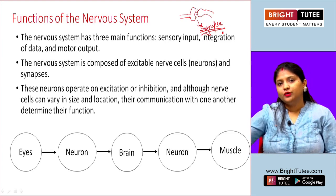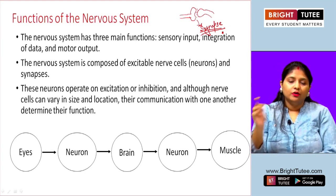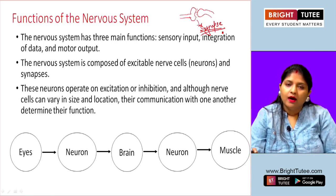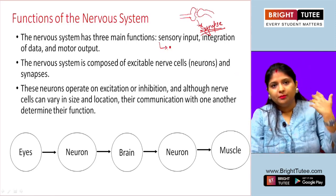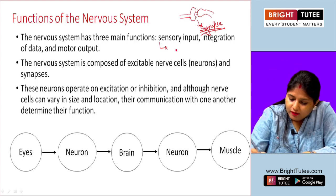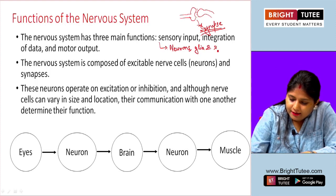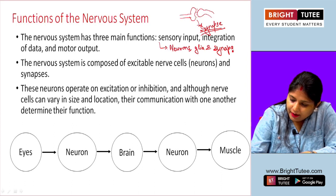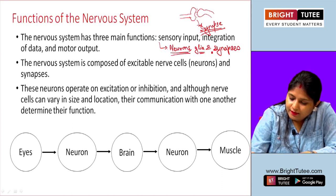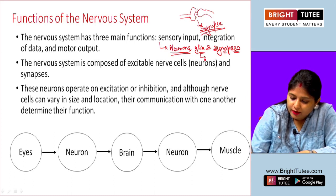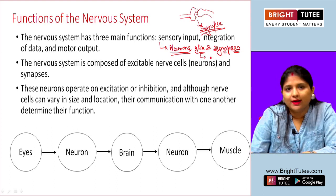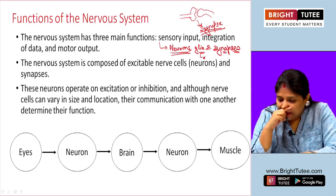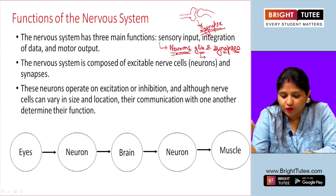The sensory input is received by neurons, glia, and synapses — all three play an important role. Glia are cells found within the tissues that are not excitable, meaning they do not have the ability to transfer information the way neurons do, but they help in myelination.